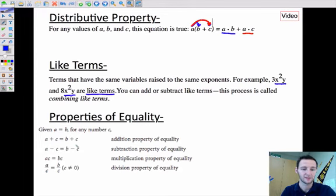And then we've got the properties of equality. So we've got the first, the addition property of equality, that if you add c to one side, you have to add c to the other side to make it equal. So this word equal.